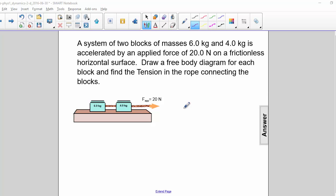A system of two blocks of masses 6 kg and 4 kg is accelerated by an applied force of 20 N on a frictionless horizontal surface. Draw a free body diagram for each block and find the tension in the rope connecting the blocks.